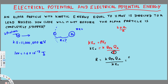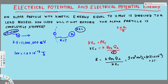Now let's plug in all the values. k is 9 × 10⁹ N·m²/C². For q_Pb, lead has 82 protons, so q_Pb = 82 × 1.6 × 10⁻¹⁹ C. For q_alpha, it has two protons, so q_alpha = 2 × 1.6 × 10⁻¹⁹ C. In the denominator, the kinetic energy is 11 × 10⁶ electron volts multiplied by 1.6 × 10⁻¹⁹ J/eV.